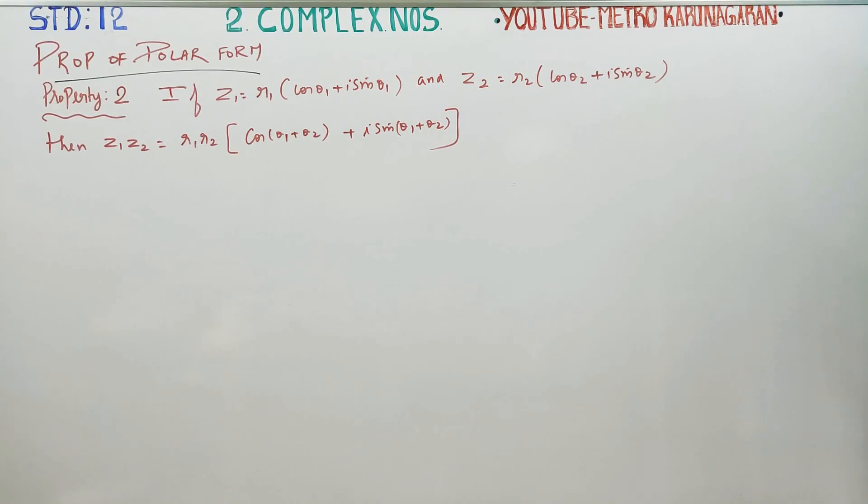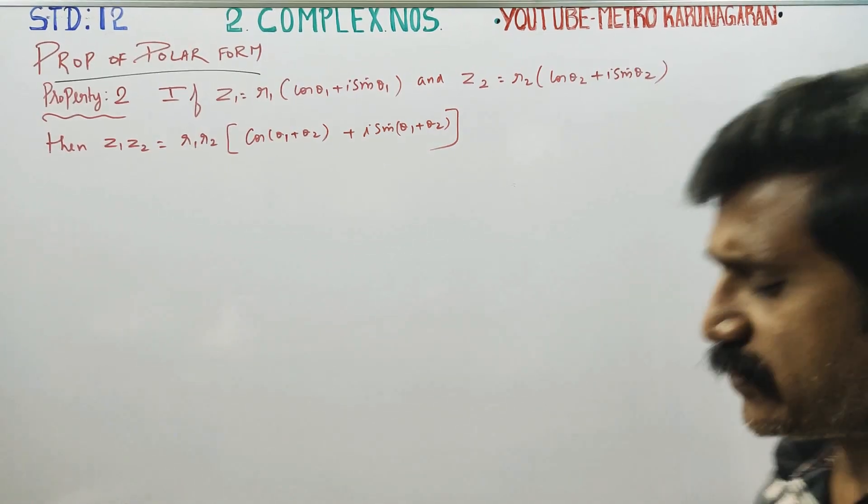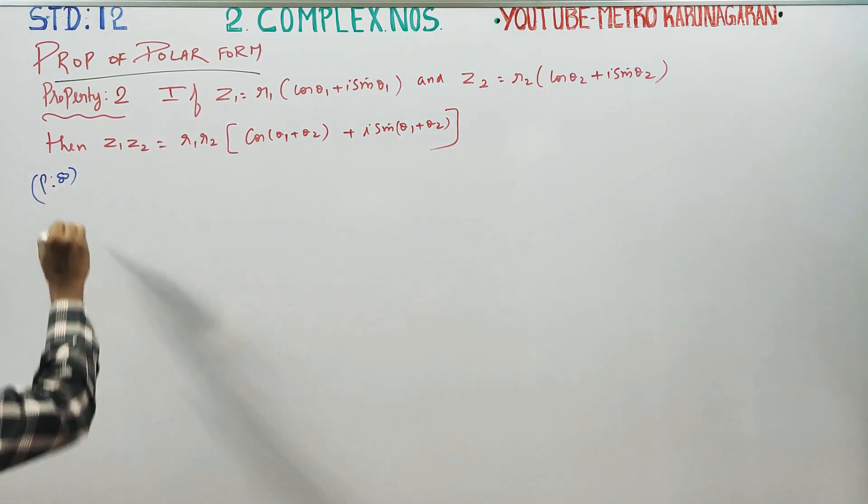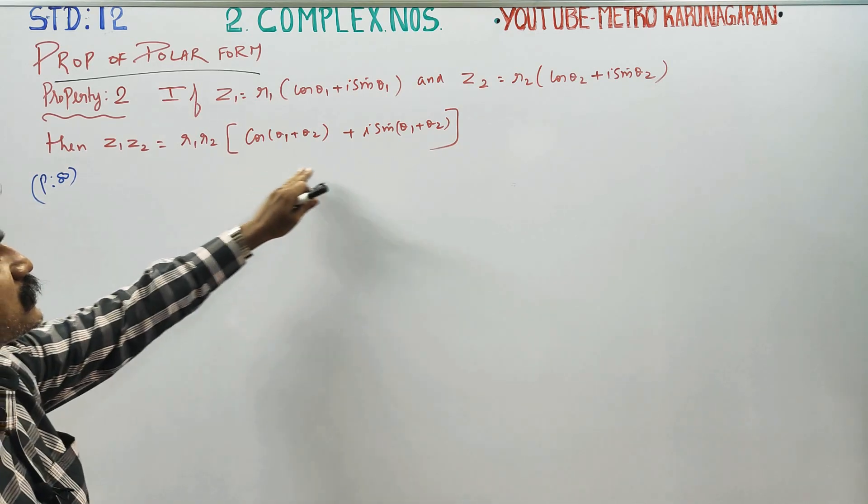Dear 12th standard students, I am Metro Karanagaran. In complex numbers, properties of polar form, property number 2, page number 80. This is page number 80. We have to prove that Z1 times Z2 is equal to this formula.